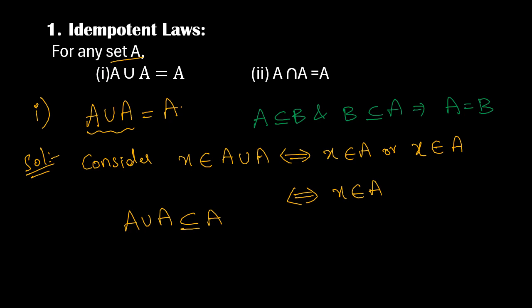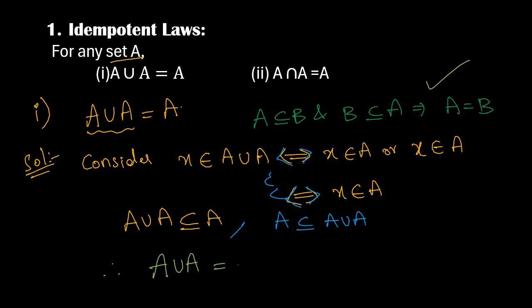I am using the symbol if and only if, which means you can take it either way — left hand to right side and right hand to left hand side. So from this I can also conclude that A is a subset of A union A, because I am going from the back step. So from these two conditions, the first set is a subset of the second one and the second one is also a subset of the first one. With the help of the equality of sets, I can say that A union A must be equals to A. This is the proof.